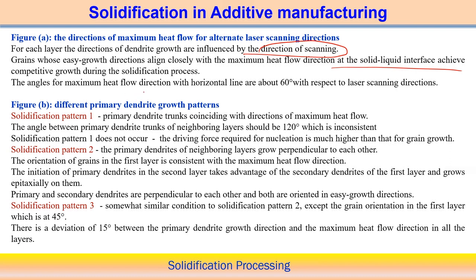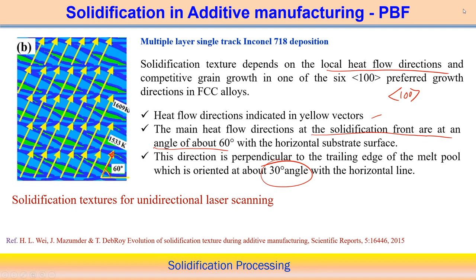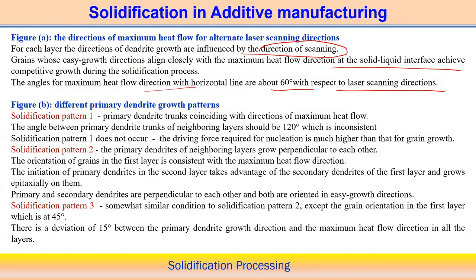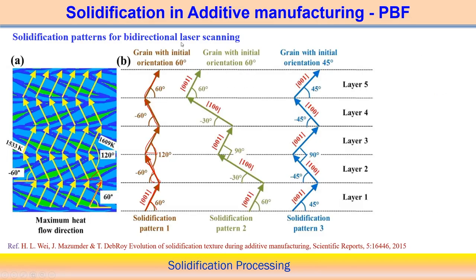If the angle for the maximum heat flow direction with the horizontal is around 60 degrees for unidirectional scan, when discussing different primary dendritic growth patterns in bidirectional laser scanning, the solidification analysis shows we need to follow solidification pattern one — the first pattern.